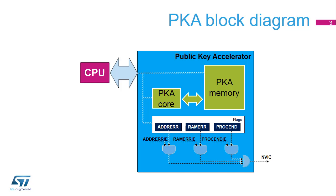All flags can generate an interrupt if the corresponding interrupt enable bit is set: PROCENDIE, ADDRERRIE, or RAMERRIE. When the PKA peripheral reset signal is released, the PKA RAM is cleared automatically, taking 894 clock cycles. During this time, the setting of the EN bit in PKA CR is ignored.